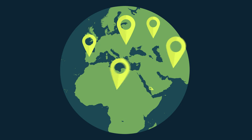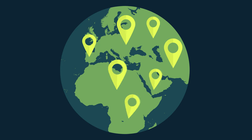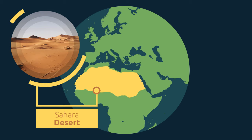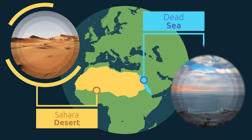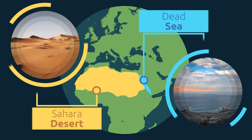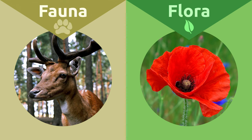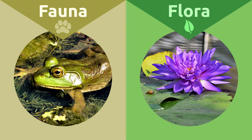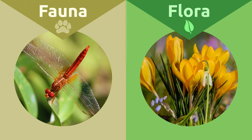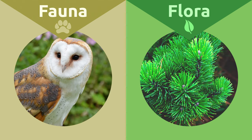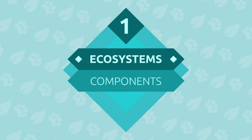Ecosystems are found in different parts of the planet. They can be very big, like the Sahara Desert, or much smaller and circumscribed, like the Dead Sea. The flora and fauna of each ecosystem have adapted to live according to the characteristics and resources of their surroundings, and the interaction among them defines the ecosystem and its coverage.